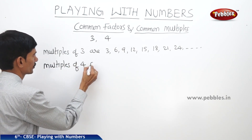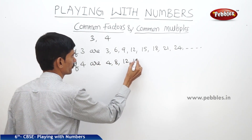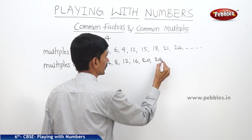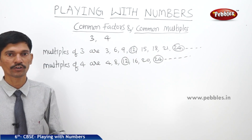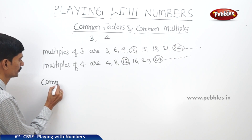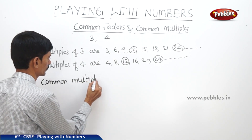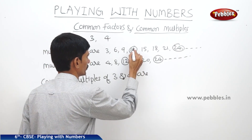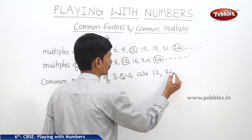Now let us write the multiples of 4. Multiples of 4 are 4, 8, 12, 16, 20, 24 and so on. Now the common multiples of 3 and 4 include 12, 24 and so on.